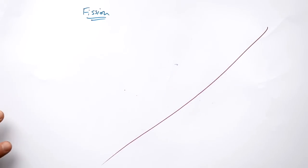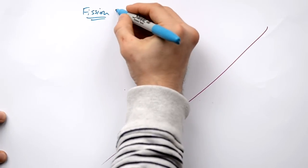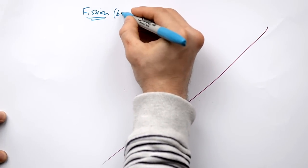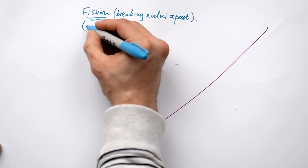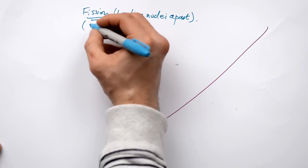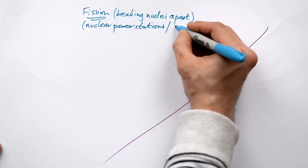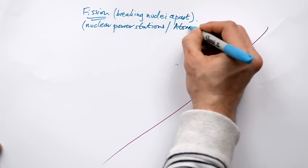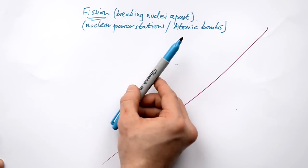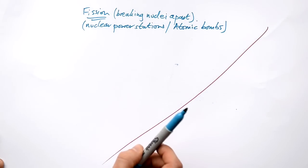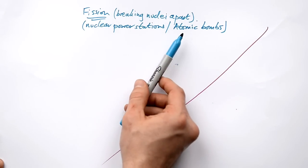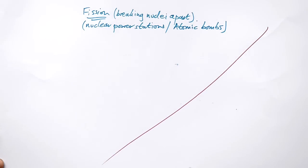The first one we have is fission. Now when we talk about things fissioning, that means breaking apart. And that's what we're doing with the nuclei. Now this is used in nuclear power stations or thermonuclear power stations and atomic bombs as well. If you see something that talks about an atomic bomb, probably going to be fission.